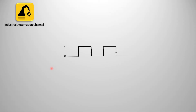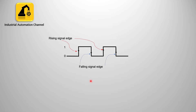Let's see what positive and negative edge means. If you look at this signal, it starts from zero, goes to high or one, and after a while goes again to zero or low state. A rising edge or positive edge is the low-to-high, or zero-to-one, transition. The falling edge or negative edge is the high-to-low, or one-to-zero, transition.